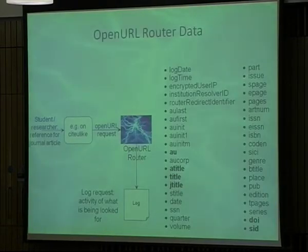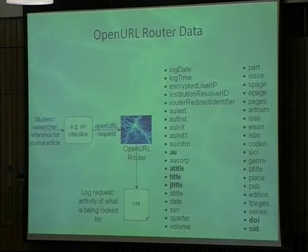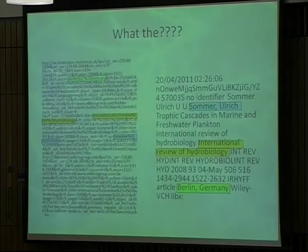The OpenURL router logs as much of the data as it gets at the same time. There's a lot of stuff in there, but you might recognize a few fields like ISSN, article title, journal title, DOI, SID. So there's an awful lot of information in there, and we'll come back to this.